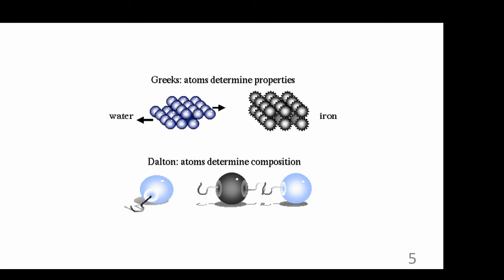So what differs between the Greeks model and Dalton's model is that the Greeks believe that the shape of the atoms determine the material's properties, while Dalton believed that the composition or the types of atoms determine the material's properties. Essentially, Dalton saw atoms as playing a different role.